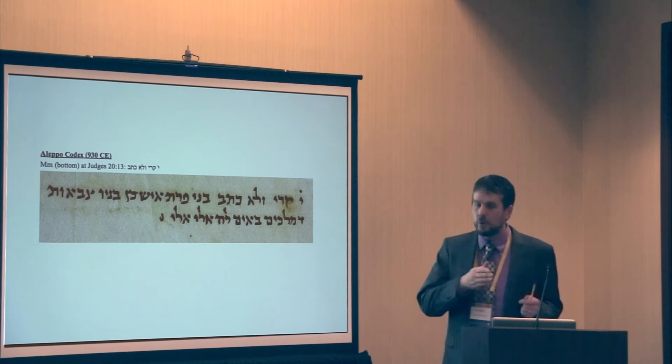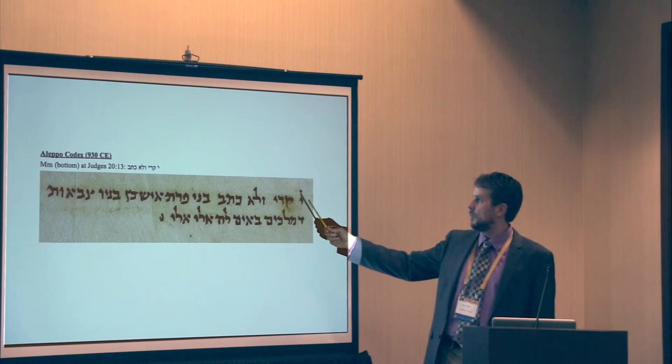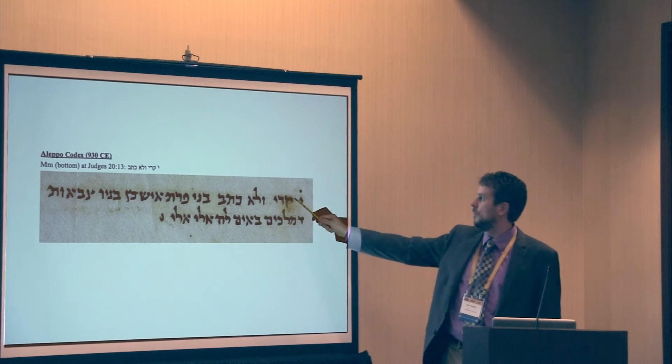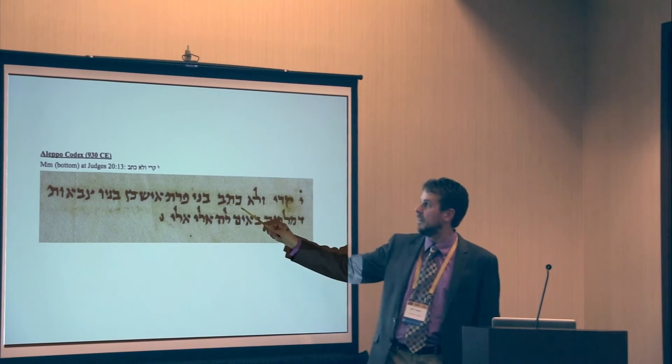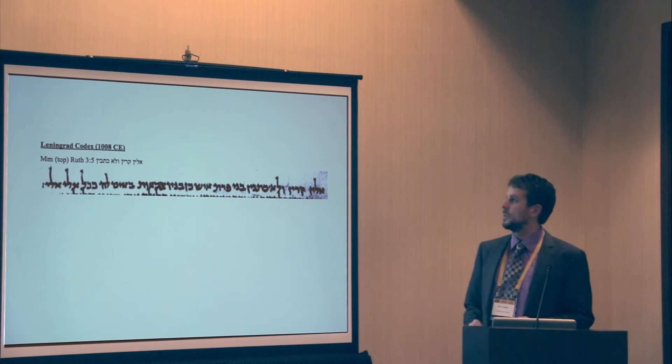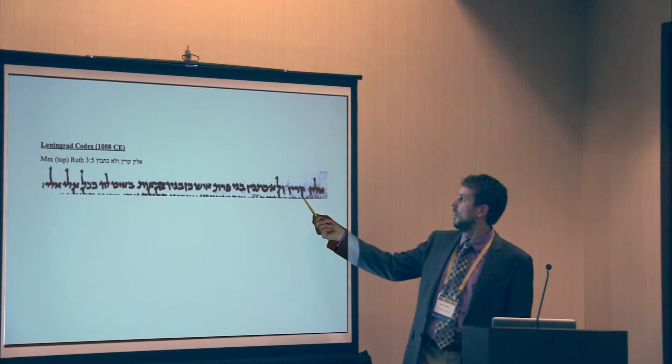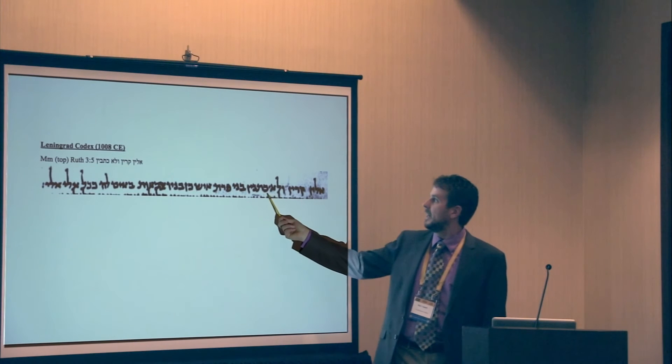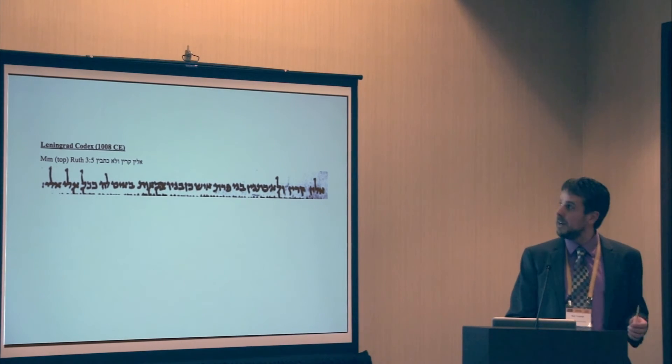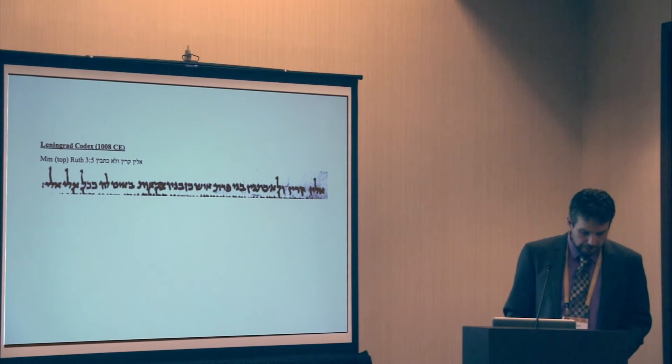Aleppo codex, we're just moving forward in time, chronologically, in terms of Masora Gedola, at the bottom of Judges 20:13, we have a list. Ten, notice Kuf-resh-yod, Vala, Ketav, not Ketiv, Ketav. And then Leningrad codex at the top, Masora Gedola, Ruth 3:5. Eileen, Karin, notice no yod, or I'm sorry, no vav here, no holam. Eileen, Karin, Vala, Katvin, we have the active participle again. So all these manuscripts testify to active participles, which support, now I didn't know if Sokoloff knew this or not, but he certainly was right on.